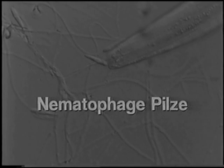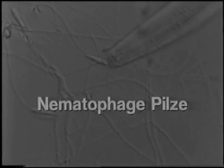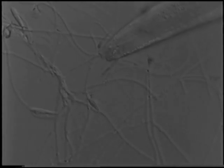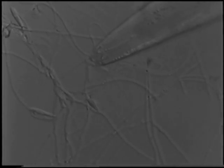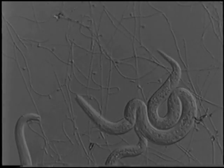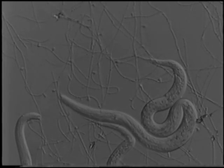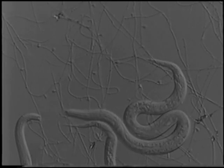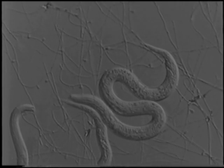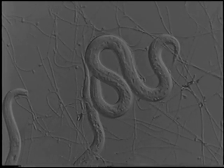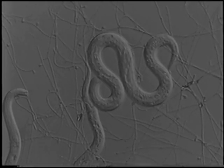Nematophagous fungi. Soil nematodes are small roundworms, some of which are parasitic on plants and animals and may cause severe damage to crops and livestock.